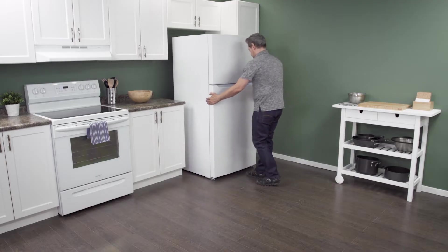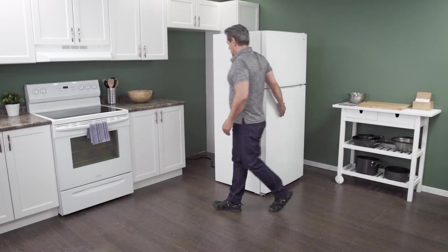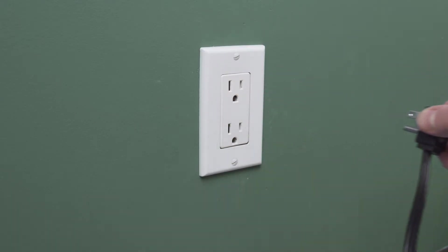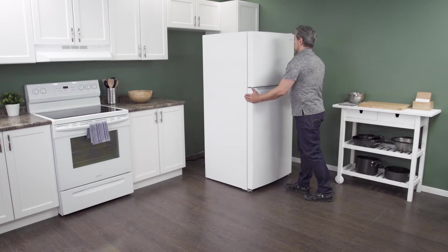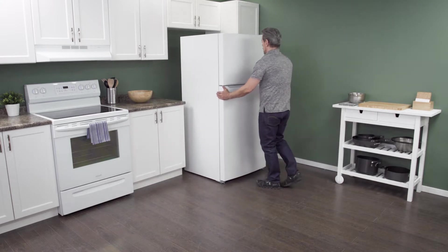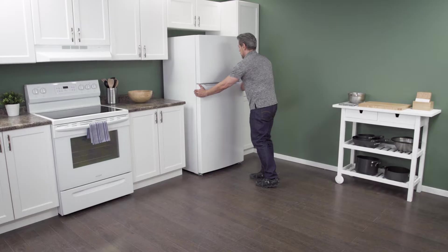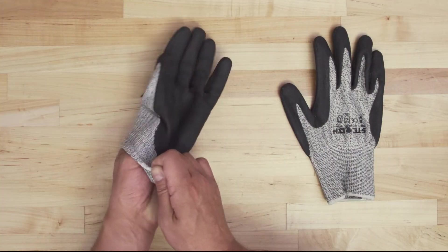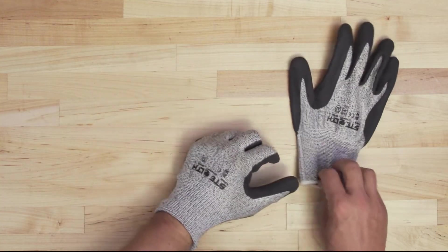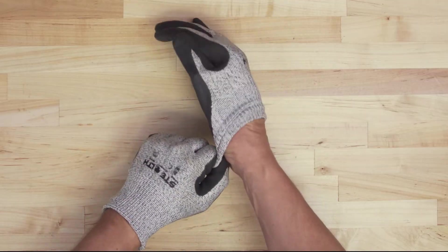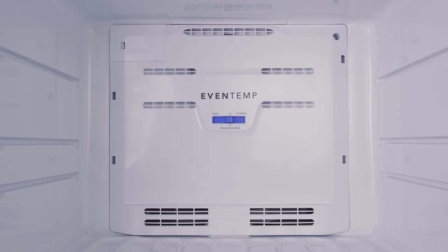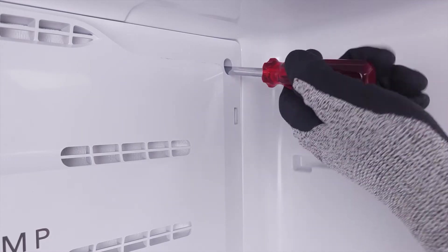First, slide the refrigerator out from the wall. When there is enough room, unplug the cord to disconnect the power. In this case, you can work on the refrigerator in place, with it still against the wall. Since the evaporator fins are sharp, it's best to wear cut resistant gloves. To access the evaporator coils, you'll have to remove the screws to the freezer cover panel.